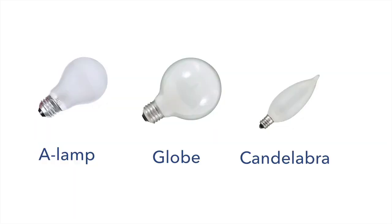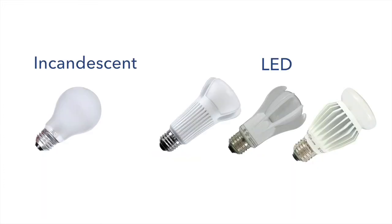The most common type of omnidirectional bulb in the home is the A-shaped bulb. When bulbs are intentionally visible, globe or decorative shapes, such as the candelabra, are usually used instead. LED replacements for incandescent A-shaped bulbs come in different forms, but they perform the same function.